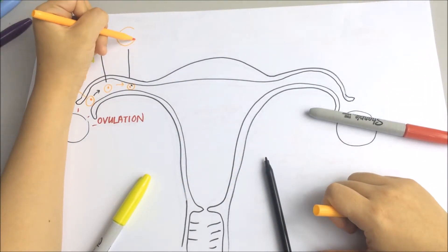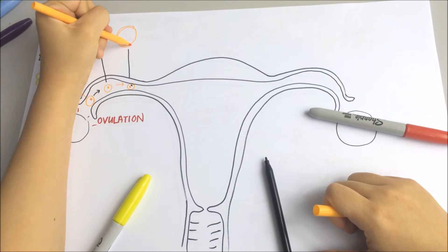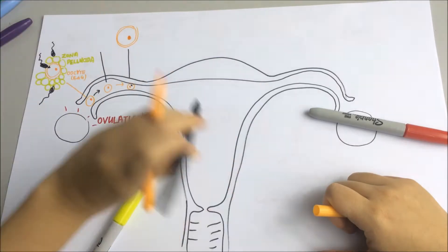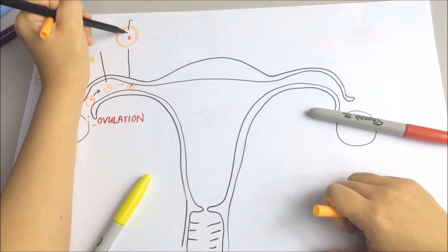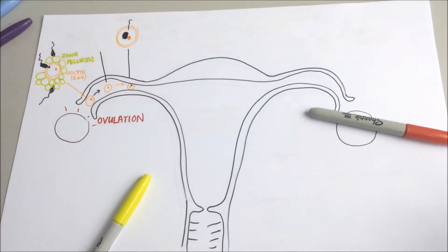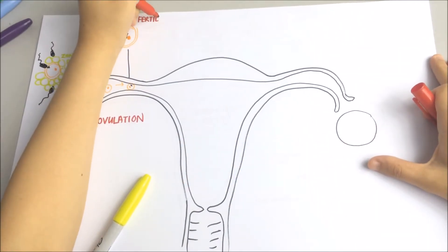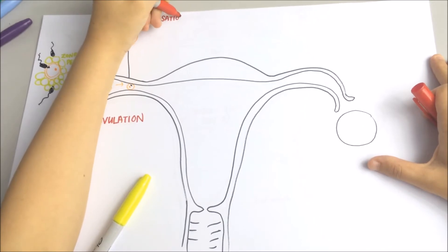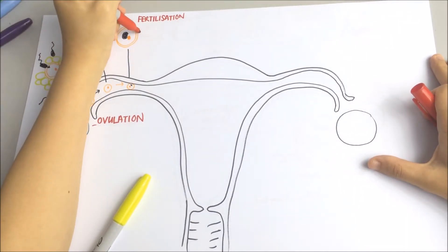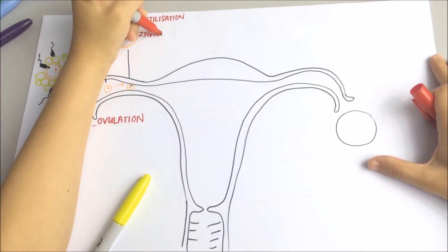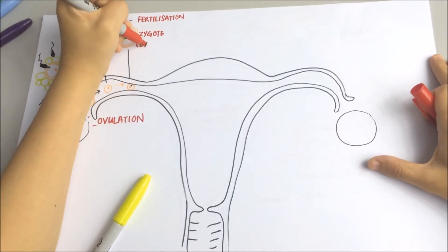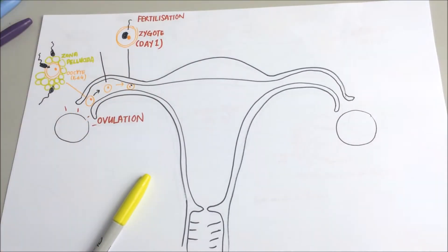Once that happens, the sperm will discard its tail and the nucleus will move toward the nucleus of the egg cell. The nuclei of the sperm cell and the egg cell will then fuse, forming a diploid nucleus that contains 23 chromosomes from each cell. The fertilized ovum is now known as a zygote, and this indicates day one of the new life.